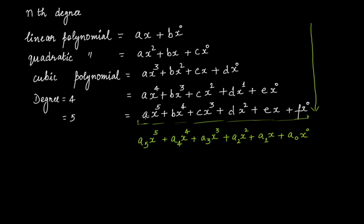Nothing has changed. A, B, C, D, E, F are constants. A5, A4, A3, A2, A1, A0 are also constants. This is not a fixed thing — you can write P, Q, R, S, T, U, whatever you want. It's a general way to express a polynomial. You can take any constant. The point is that these coefficients are actually constants.